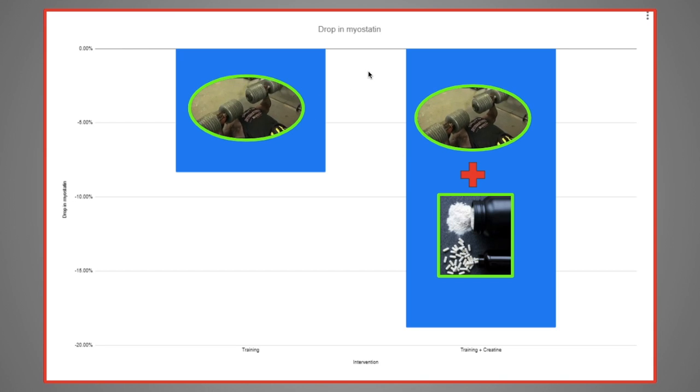Myostatin is also the reason why people who supplement with creatine tend to put on more muscle. It's not just the other effects of creatine—it's mainly that creatine also is a very powerful myostatin blocker.